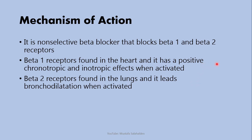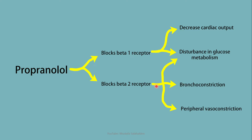The therapeutic effects come from beta 1 inhibition, while some of the adverse effects come from beta 2 inhibition. This figure clarifies this further: propranolol blocks both beta receptors. Blocking beta 1 decreases cardiac output — this is the therapeutic effect useful in hypertension, angina, myocardial infarction, and other conditions. Inhibiting both receptors also causes disturbances in glucose metabolism.